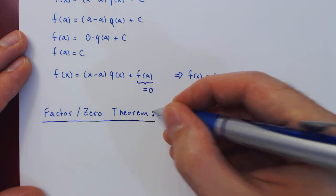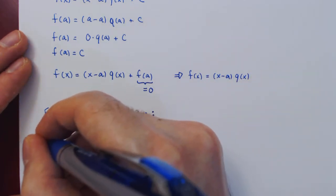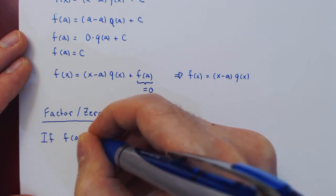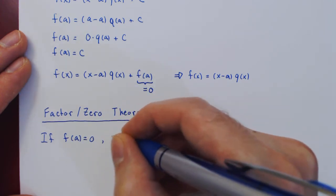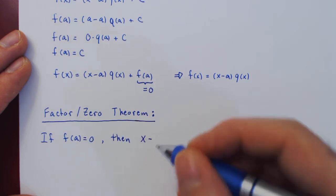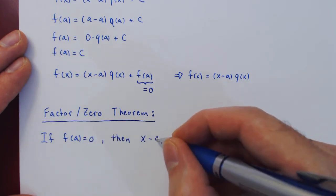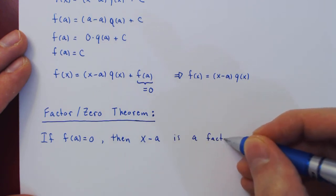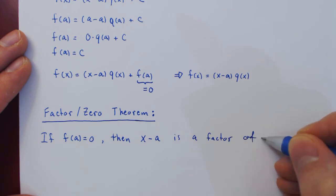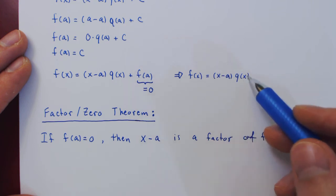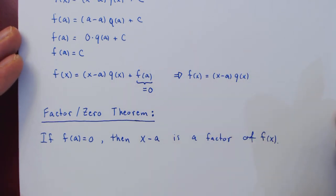We can now write this statement. If we have a polynomial f that is equal to 0 at x = a, then automatically, x minus the value of the zero is a factor of the polynomial f(x). In other words, f(x) is equal to (x - a) times some other polynomial. And that's it.